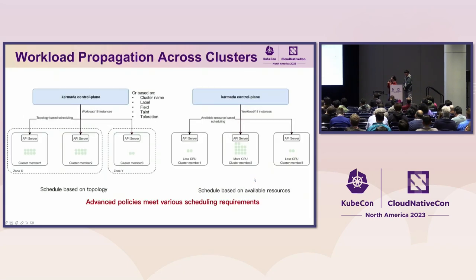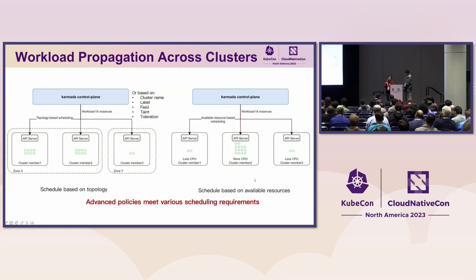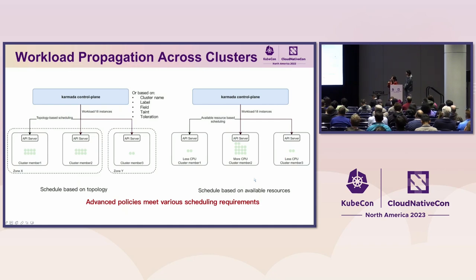You may say you already have a perfect CI/CD pipeline to handle all that work. But Karmada also offers advanced workload propagation policies — not only based on cluster name. It can be based on labels, field, taint and toleration, and also topology and available resources. For example, most of the workload can be scheduled to zone X and less to zone Y. You can define all of that in your propagation policy.